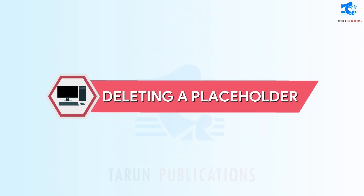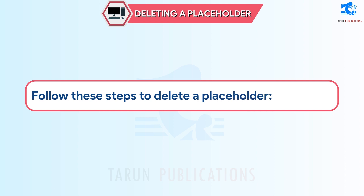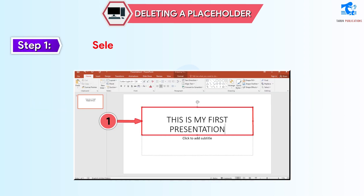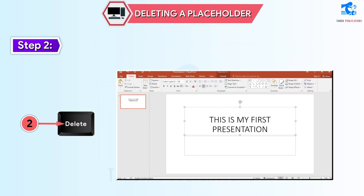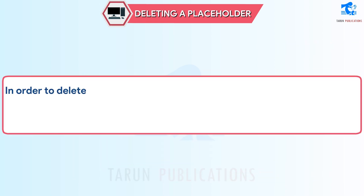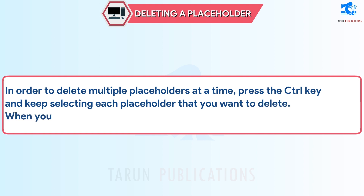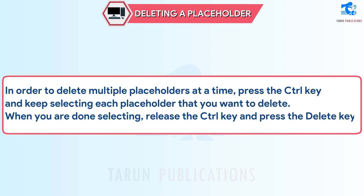Deleting a Placeholder. Follow these steps to delete a placeholder. Step 1: Select the placeholder by clicking on its border. Step 2: Press the Delete key to delete the placeholder. To delete multiple placeholders at a time, press the Ctrl key and keep selecting each placeholder you want to delete. When you are done selecting, release the Ctrl key and press the Delete key.